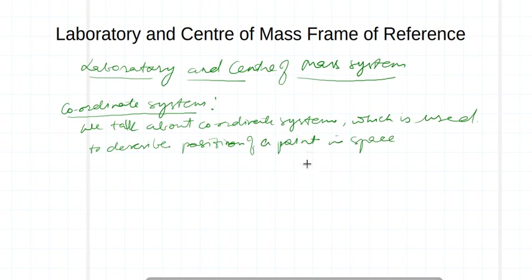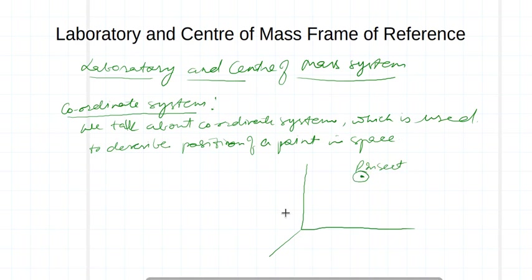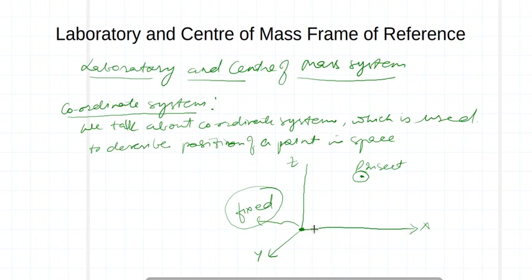Let us take an example. Say in some room an insect is flying and this insect is at point P at a particular time. To describe the position of this insect, we have to take a fixed point. With respect to this fixed point I can make observations along the x-axis, y-axis, and z-axis to find where this insect is flying.